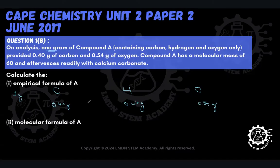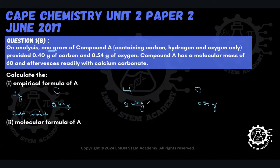These are the masses of the elements that make up compound A: carbon, hydrogen, and oxygen. Now, once we have a mass, our next step is to convert the mass to moles. That's our immediate next step — convert mass to moles. In order to do that, we're going to divide each element by its relative atomic mass.